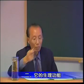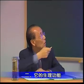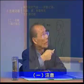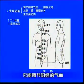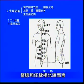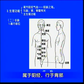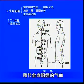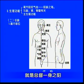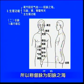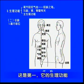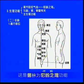督脉的生理功能：第一，能调节阳经的气血。督脉与任脉相比较，督脉行于背部，背部属阳，总督阳经，行于背部，调节全身阳经的气血，总督一身之阳，所以称督脉为阳脉之海。